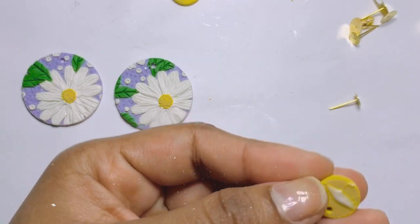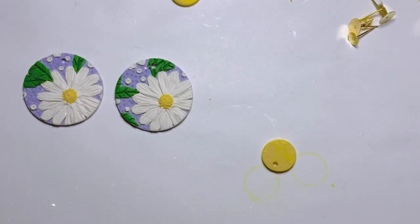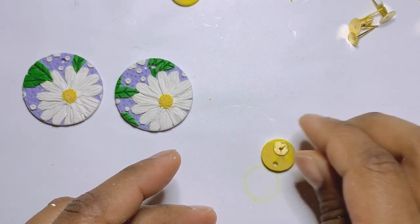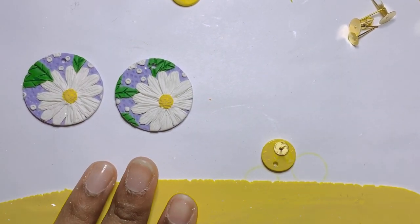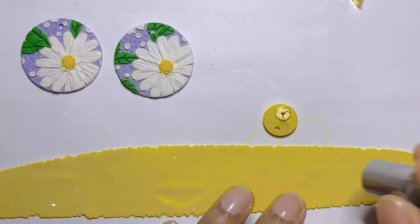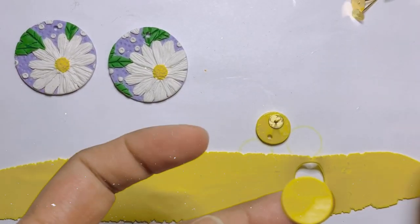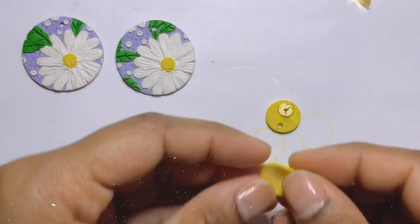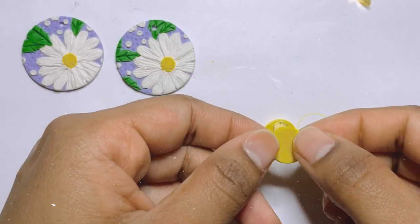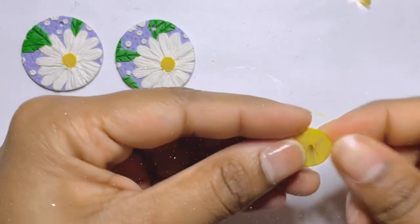Start by spreading liquid clay on the back of the piece that you want the earring post to be on. Then place your earring post on it. Roll a piece of clay using the thinnest setting on your pasta machine. Then using the same cutter, cut out a piece of clay. Place this piece of clay through the earring post.